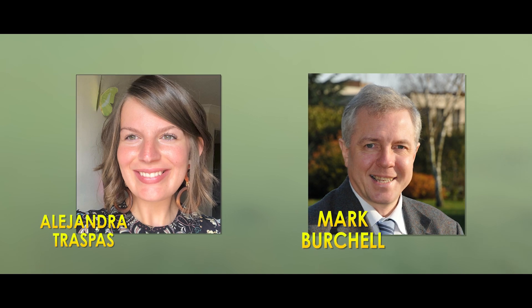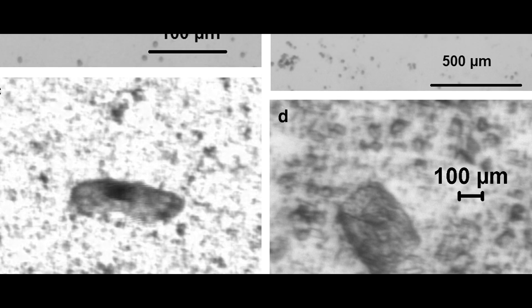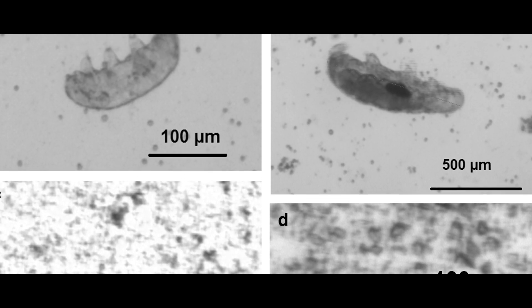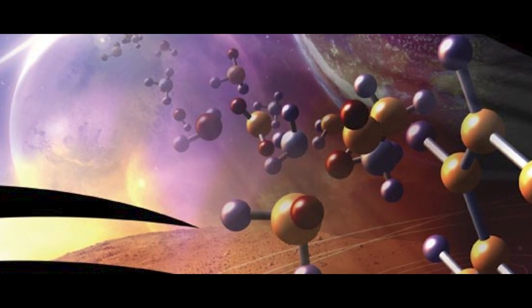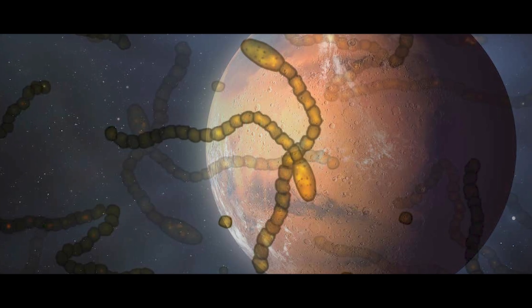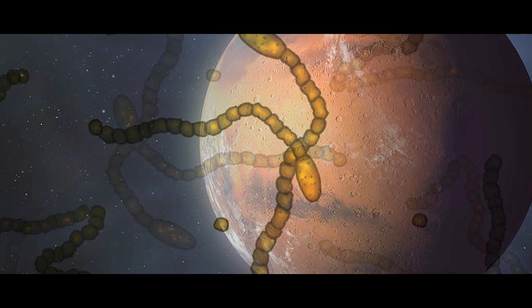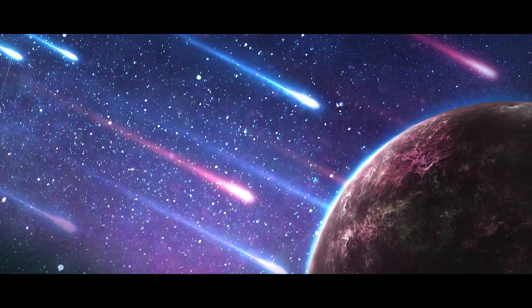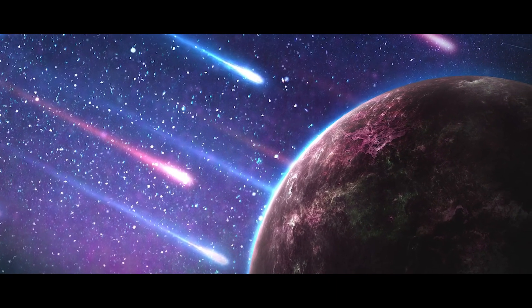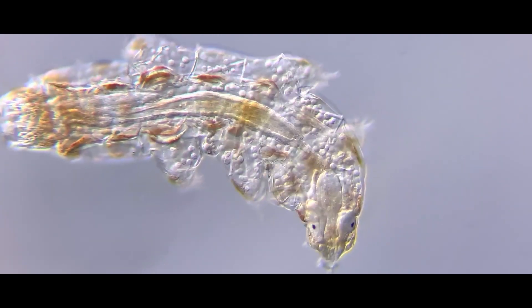Throwing tardigrades at a wall. Alejandra Traspas and Mark Burchell, two scientists at the Center for Astrophysics and Planetary Science at the University of Kent, experimented to see if tardigrades could survive extreme impacts. The greater purpose of these experiments was to test how or if tiny organisms could survive hitching a ride on an asteroid from planet to planet. This is a possible explanation for the origin of life on Earth - panspermia. Perhaps life on Earth, or at least some life, arrived here on an asteroid.